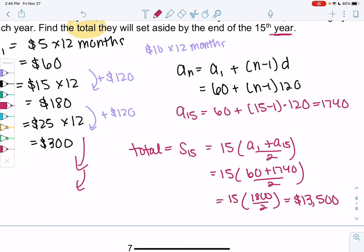So they seem like such small savings, but it added up pretty nicely. So they now have $13,500.